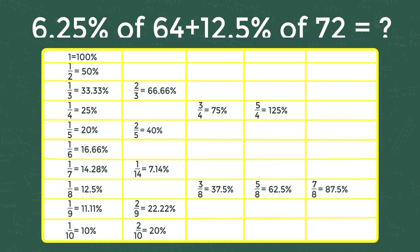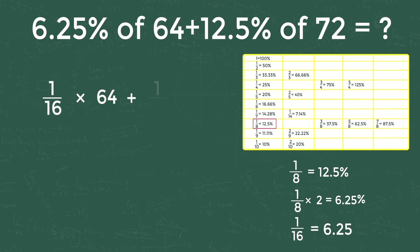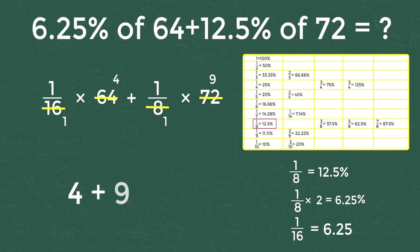From the table, 1 by 8 is 12.5 percent. Multiplying 8 by 2, so 6.25 percentage is 1 by 16. The equation becomes 1 by 16 into 64 plus 1 by 8 into 72. That gives 16 times 4 and 8 times 9, so the equation becomes 4 plus 9.